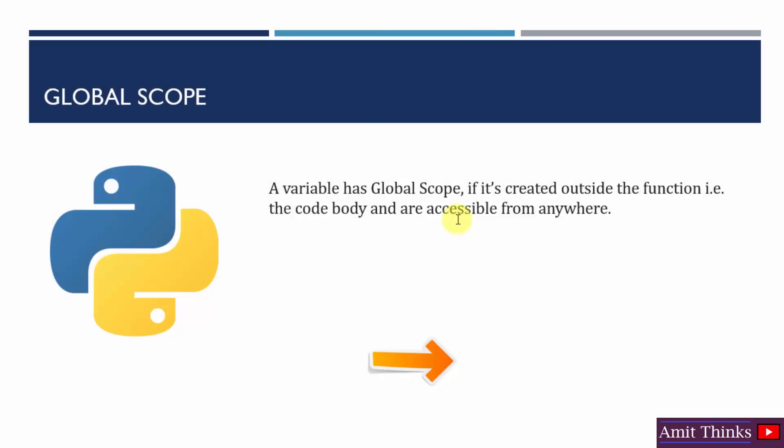Now let us focus on global scope in Python. A variable has global scope if it's created outside the function and accessible from anywhere. We will create the variable and assign the value to it outside the function so that we can access it anywhere in the entire program.